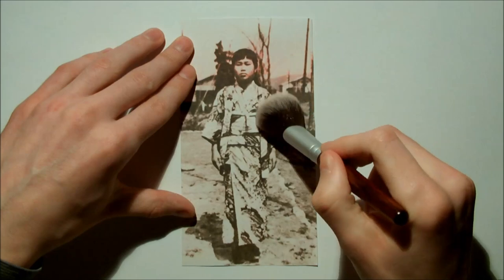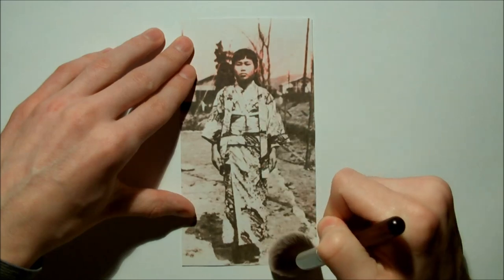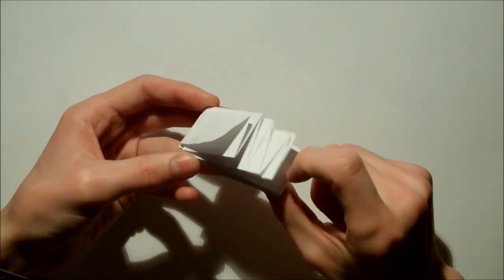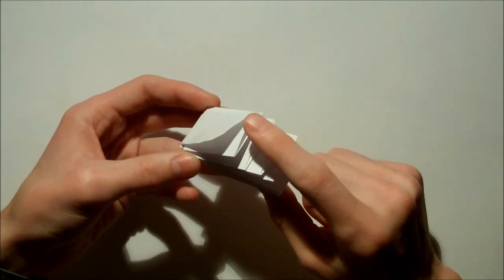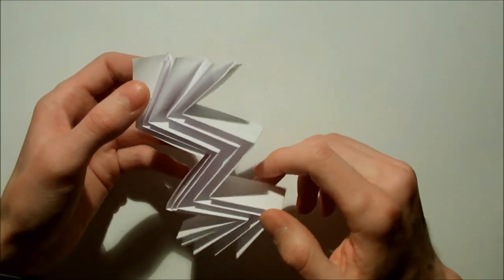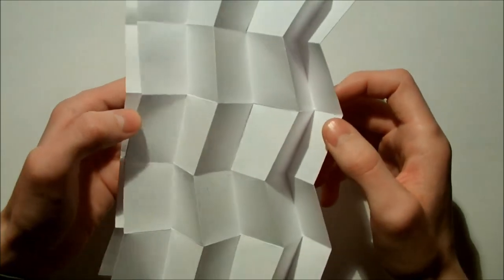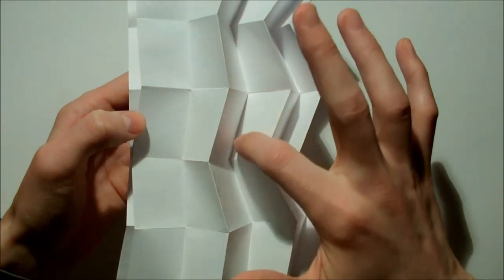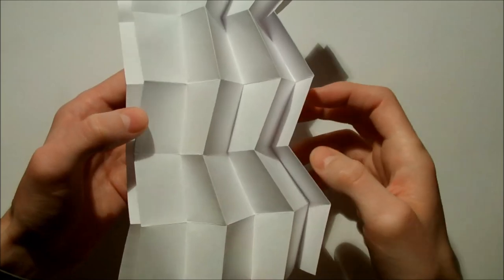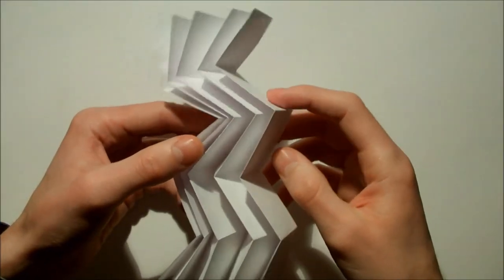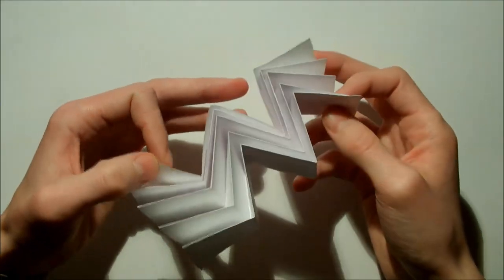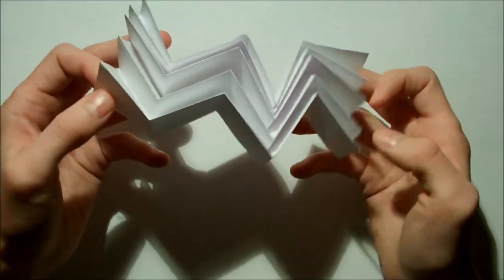The art of folding paper has also many different practical applications. For example, some particular method of folding paper at certain specific angles, invented by a Japanese astrophysicist, Koryo Miura, has been used to design solar panels for space satellites.